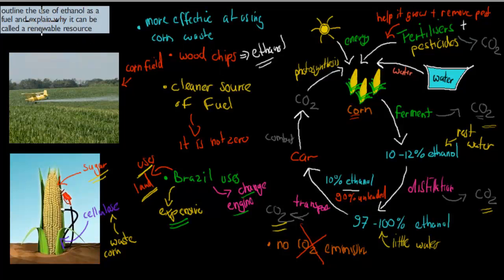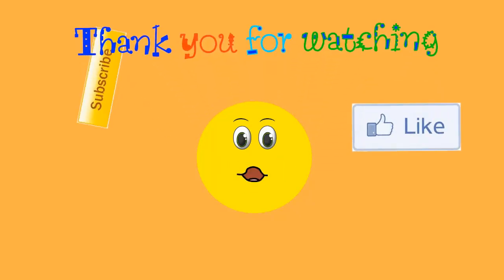So outline the use of ethanol as a fuel and explain why it can be called a renewable resource. So it's being used to an okay degree because it's a cleaner source of fuel and it's also renewable. The reason why it's renewable is because we can grow it. It's a cornfield here, it means we can grow it, whereas fossil fuels we can't grow. Some of the disadvantages were that it's more expensive, we have to change our engine if we use more than 10% ethanol, and it uses land that we could use otherwise to grow food as well. So I hope that was useful. Thank you for watching.